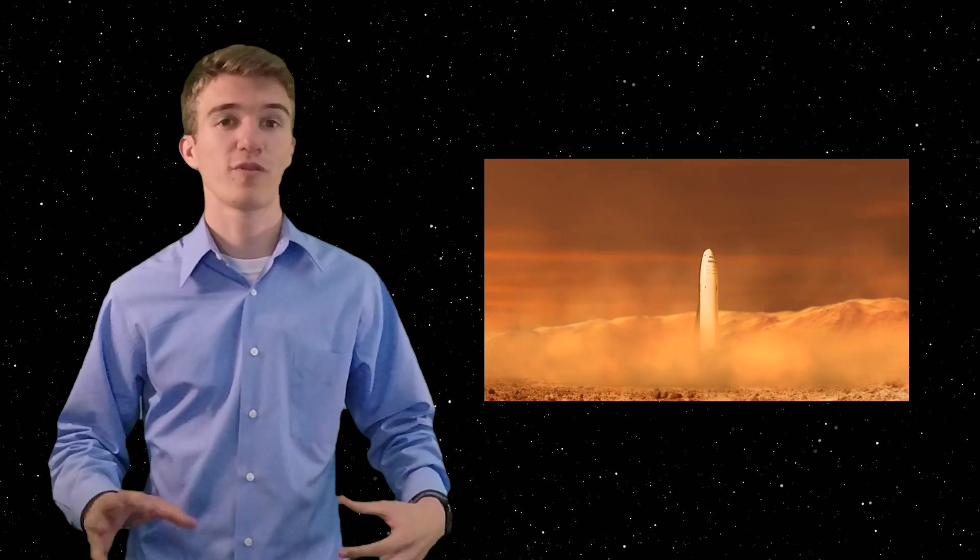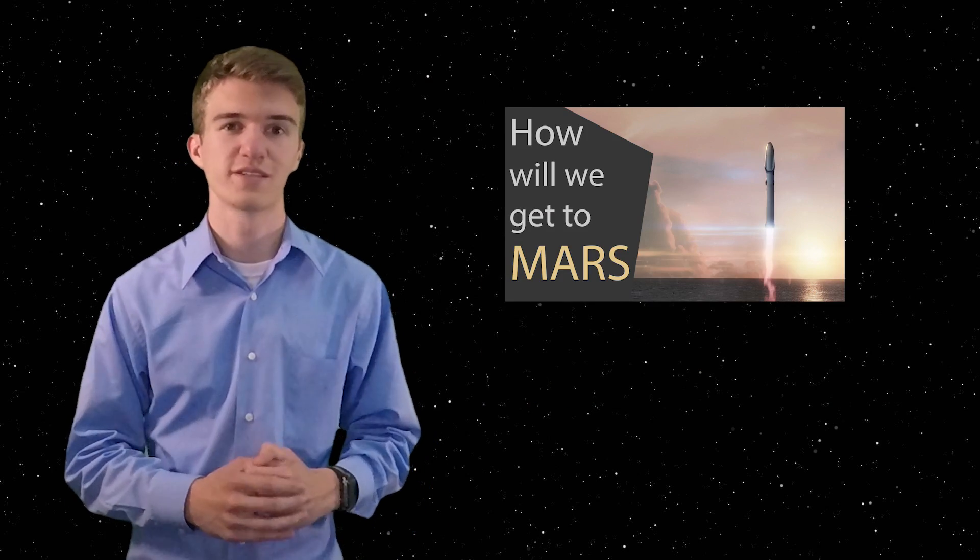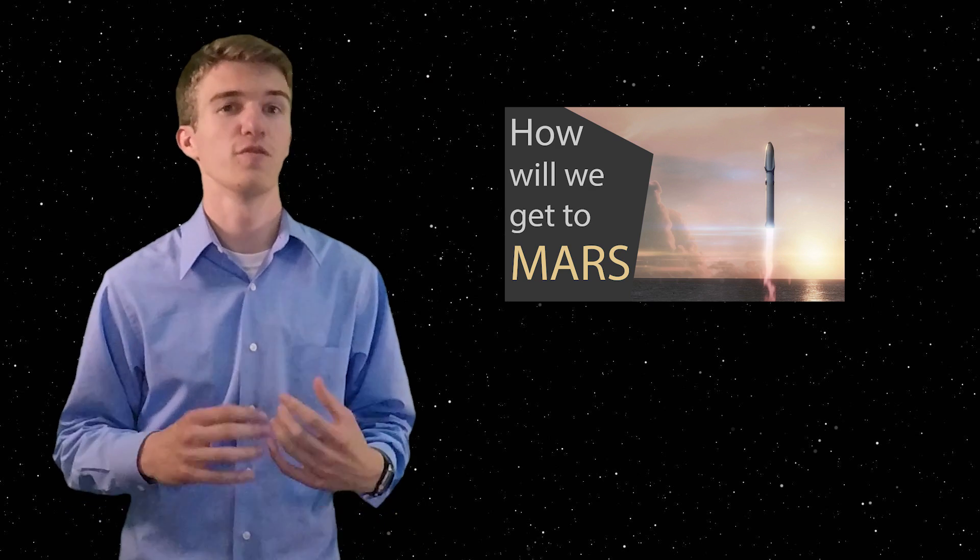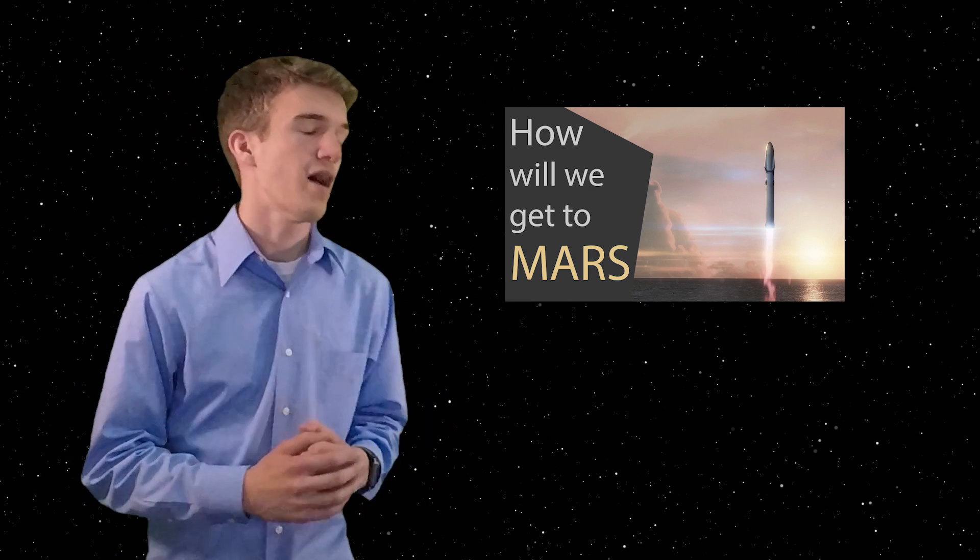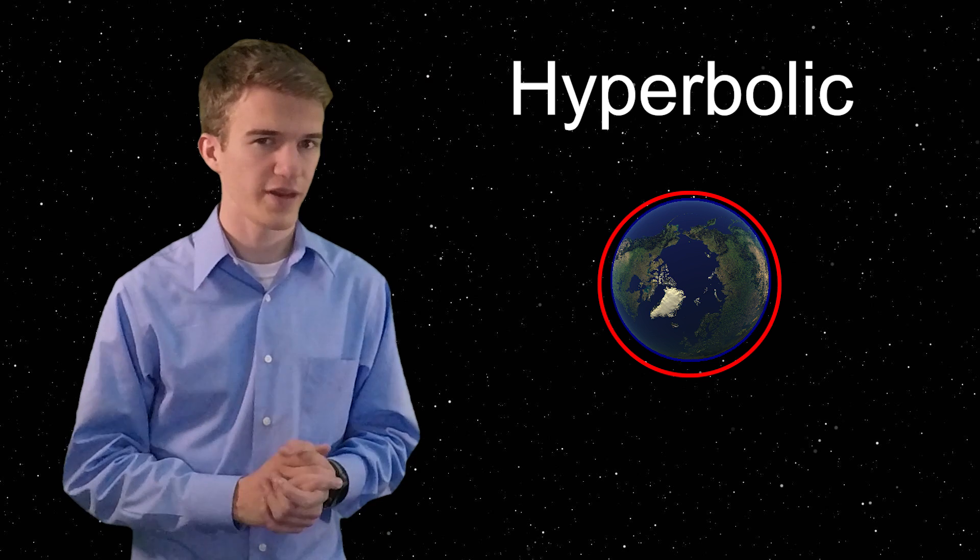So to begin, let's start out with launching from Earth. Last episode mentioned the different launch vehicles that would be successful in taking us to Mars. So if you missed that, be sure to check it out. However, once you get into space, whether it's in LEO or a different orbit around Earth, you still need to get to Mars. So the step is going on a hyperbolic trajectory, leaving Earth, heading into interplanetary space.